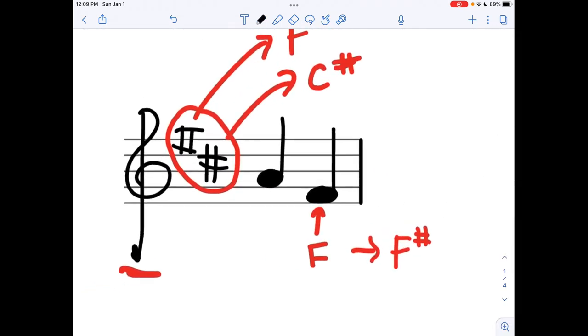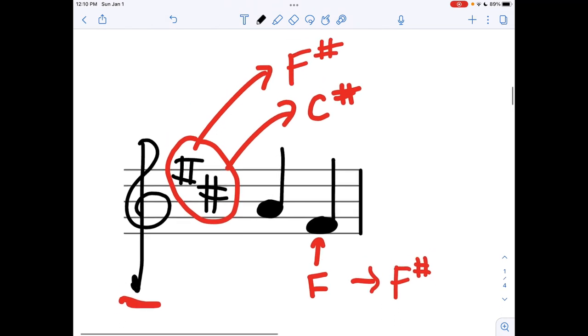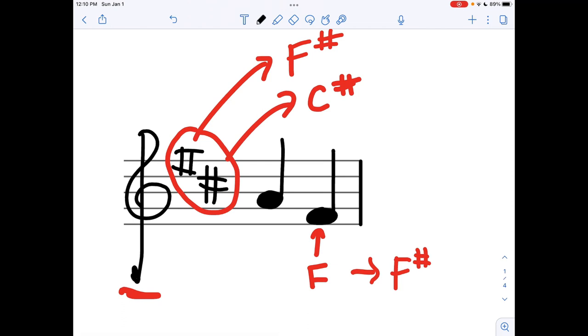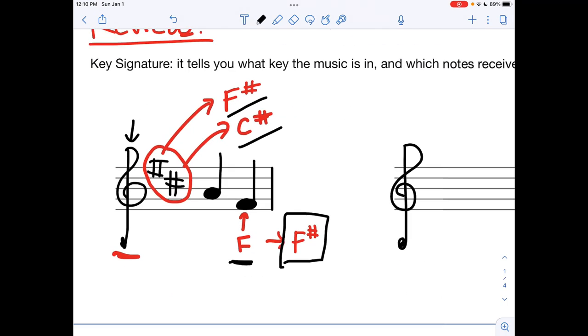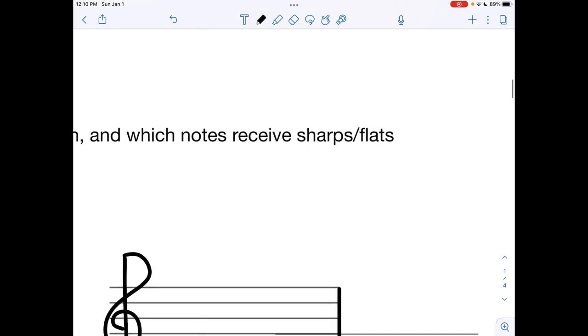Last time we talked about the order of sharps. We can tell that first of all, this is in treble clef, and our two sharps are going to be F sharp and C sharp, which means that whenever you have an F written, you're going to play or sing an F sharp. Similarly, if I had a C, then I would play or sing a C sharp.